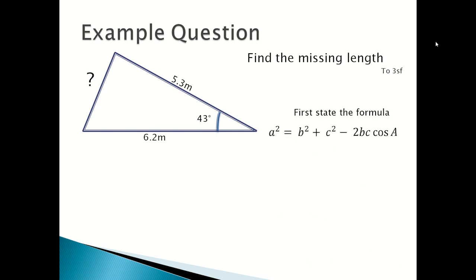Which is A squared equals B squared plus C squared minus 2BC cos A. Then you substitute in values. So you will get A squared equals 5.3 squared plus 6.2 squared minus 2 times 5.3 times 6.2 times cos 43.